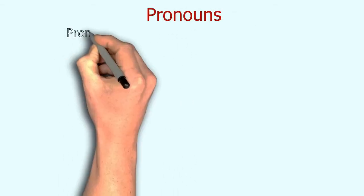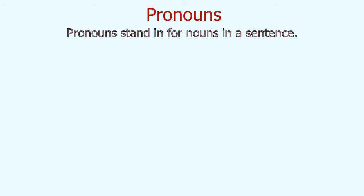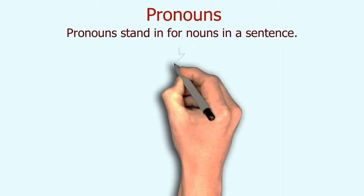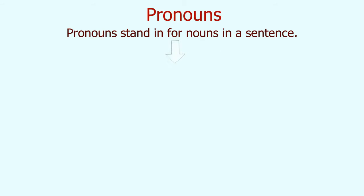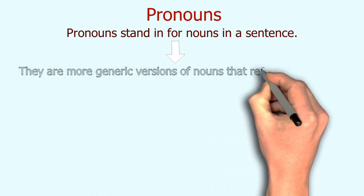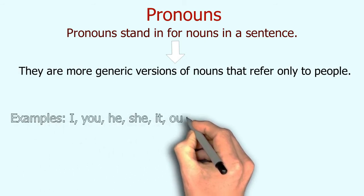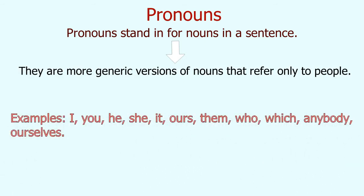Pronouns — the name shows it: 'pro' means before, 'noun' means noun. So pronouns basically come in place of nouns and are a broader, more generic term for nouns. They explain nouns in a more general way. I, you, he, she, it — all of these are pronouns.